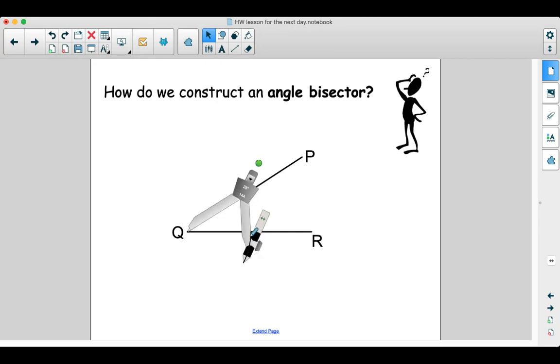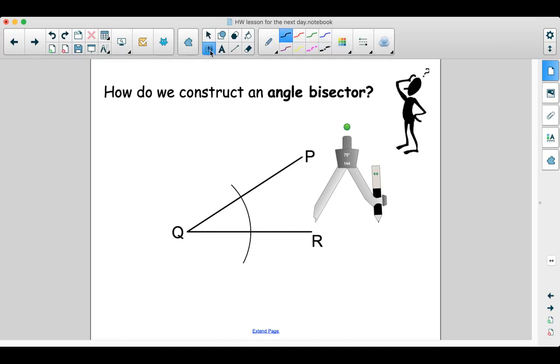And then I make a curve here like this. Okay, so now you make two points, two intersection points for the curve. For our angle. One is here. And one is here. And then next,